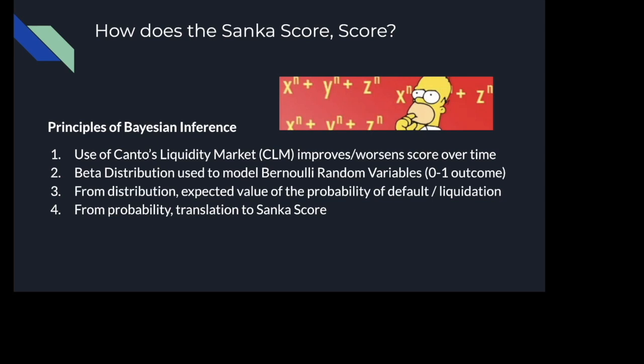Sanka uses the principles of Bayesian inference to calculate a score. For example, if we use Canto's liquidity market, we could assume that a user's score would either improve or worsen over time the more they use the protocol. If we gather all these credit events, we could find a beta distribution and use them to model a Bernoulli random variable, which has a zero-to-one outcome. From that distribution, we could derive the expected value probability of default or liquidation — so how likely a user is to repay or default. From that probability, we can apply a curve over time and translate that to a Sanka score.